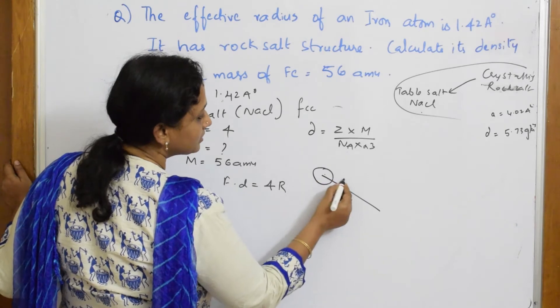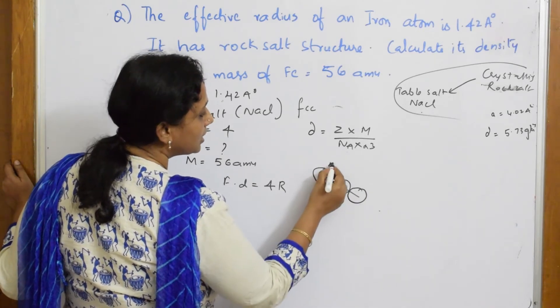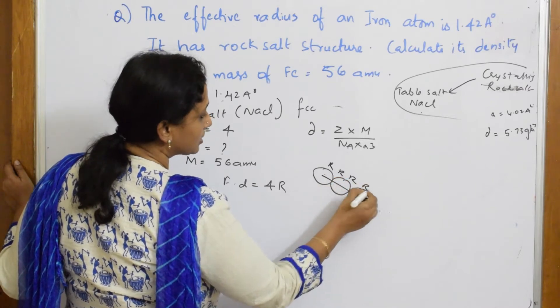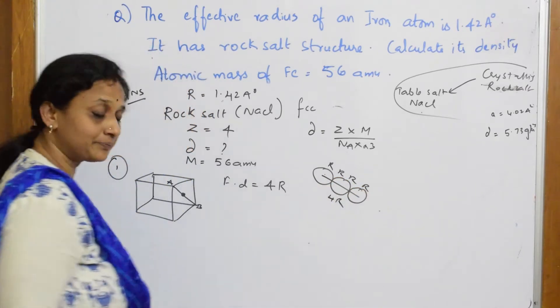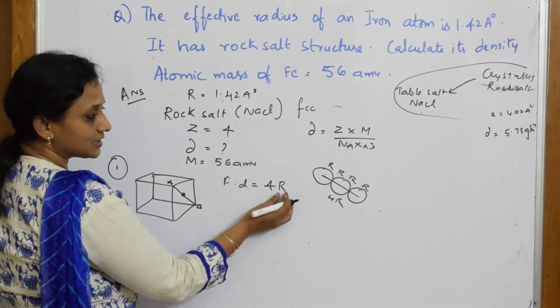So what do we get? Face diagonal is equal to 4 into R. How did I get this? When I take this face A and B, this is your atom, this is your atom. And one more has half R, R, R and R. So it is 4R. Face diagonal is 4R.